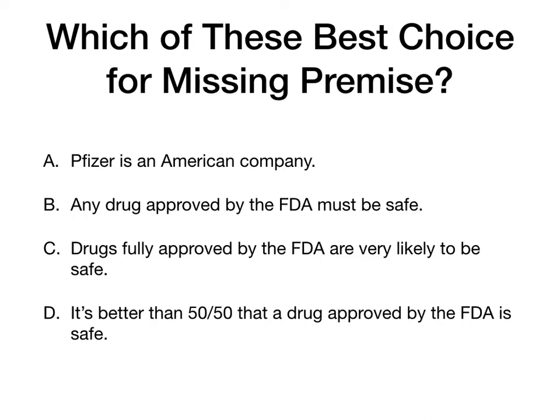The four choices are: A — Pfizer is an American company. B — Any drug approved by the FDA must be safe. C — Drugs fully approved by the FDA are very likely to be safe. D — It's better than 50-50 that a drug approved by the FDA is safe. Now think about these for a minute. If you were taking a test, you would start crossing some out. Are there any of these that you can just cross out to start with? Well, A — you can just get rid of A. So now we have B, C, and D. Think for a minute more: how would you rank these, and which do you think is the best?